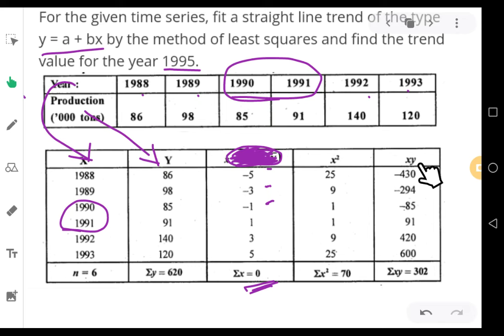Then come to xy. Take x values and multiply by the y values. 86 into minus 5 is minus 430, 98 into minus 3 is minus 294, 85 into minus 1 is minus 85, 91 into 1 is 91, 140 into 3 is 420, and 120 into 5 is 600. So the xy column is done.